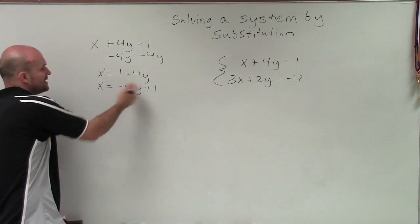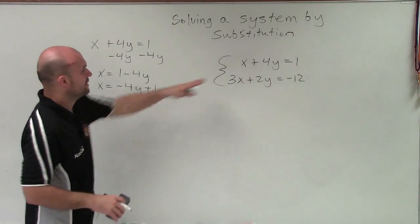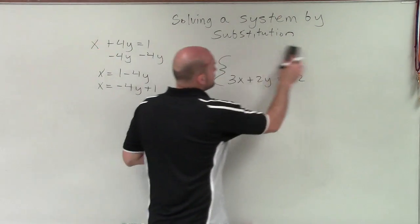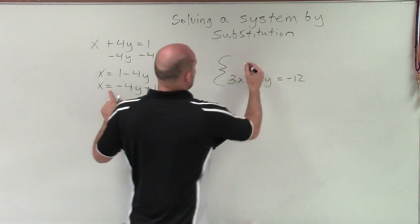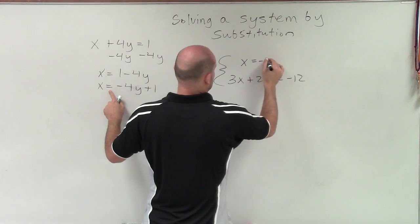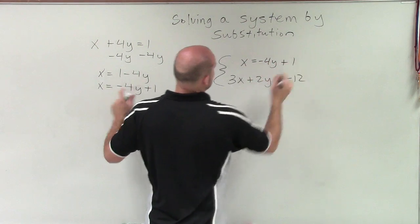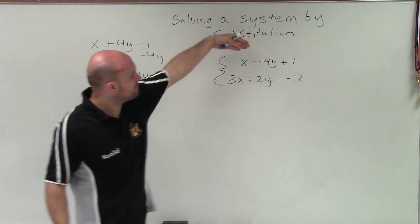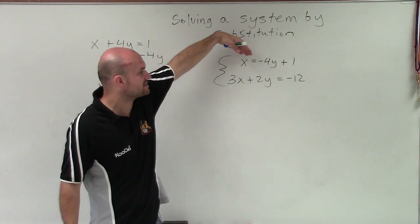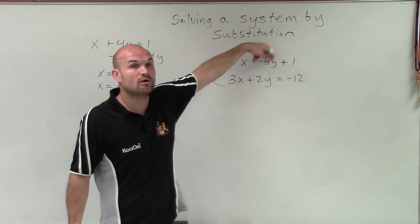So therefore, what I'm going to do is replace x equals negative 4y plus 1 in for this equation. It's the exact same equation. It's just written with the x now isolated. And the reason why we want to have this x isolated, because now we know the value of our variable x is the expression negative 4y plus 1.